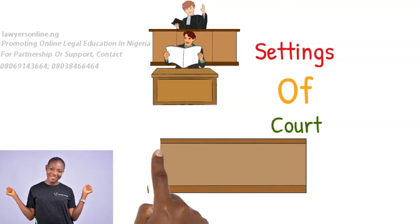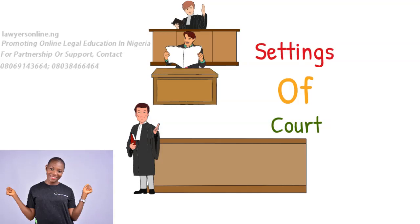3. The bar. This is where lawyers who are called to the Nigerian bar sit to do their matters in court. They must be robed. Robing is not compulsory in magistrate, customary, and area courts. Rule 45 of the Rules of Professional Conduct provides for robing of lawyers in the High Court, Court of Appeal, and Supreme Court.